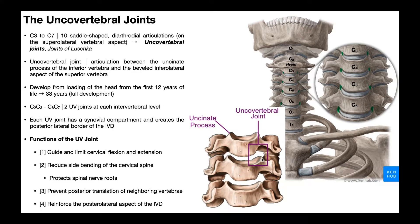This uncinate process is going to form a joint with the vertebra above. The joint between the uncinate process of the vertebra below and the inferior portion of the vertebra above is called the uncovertebral joint. Because there's an uncus on either side, there's an uncovertebral joint on either side.